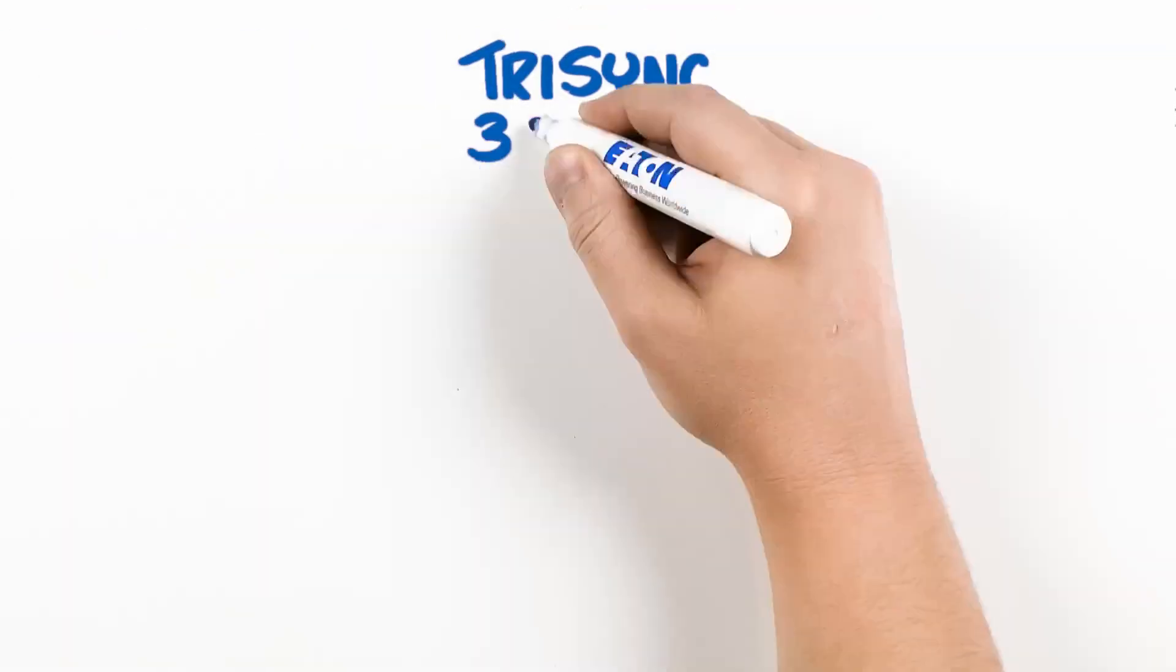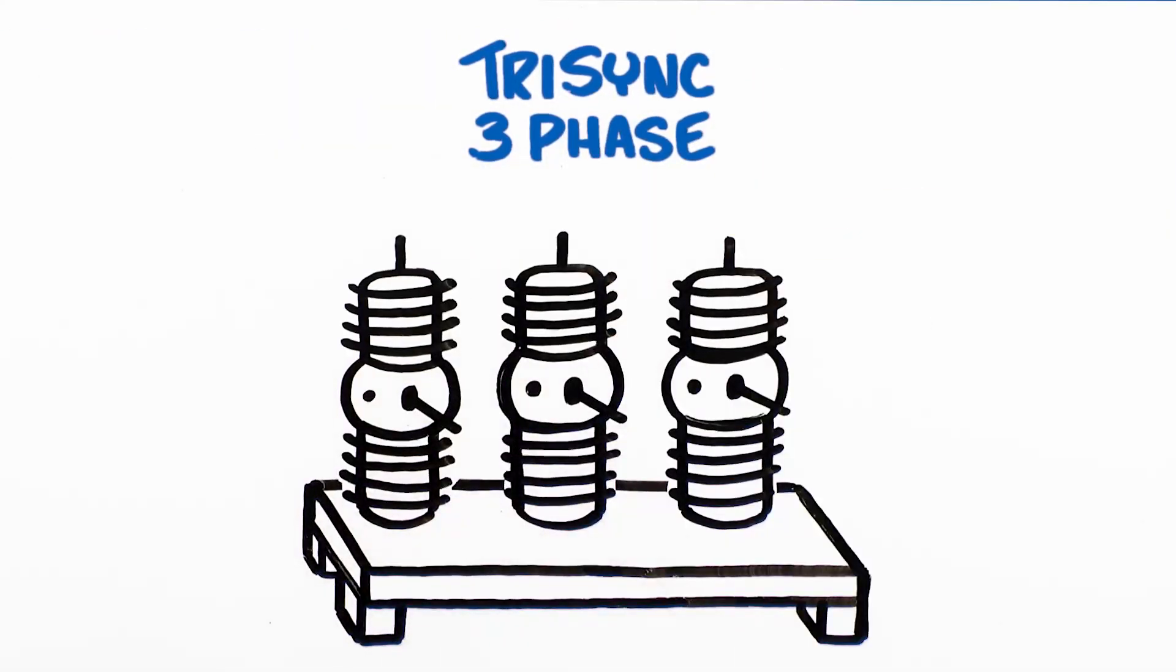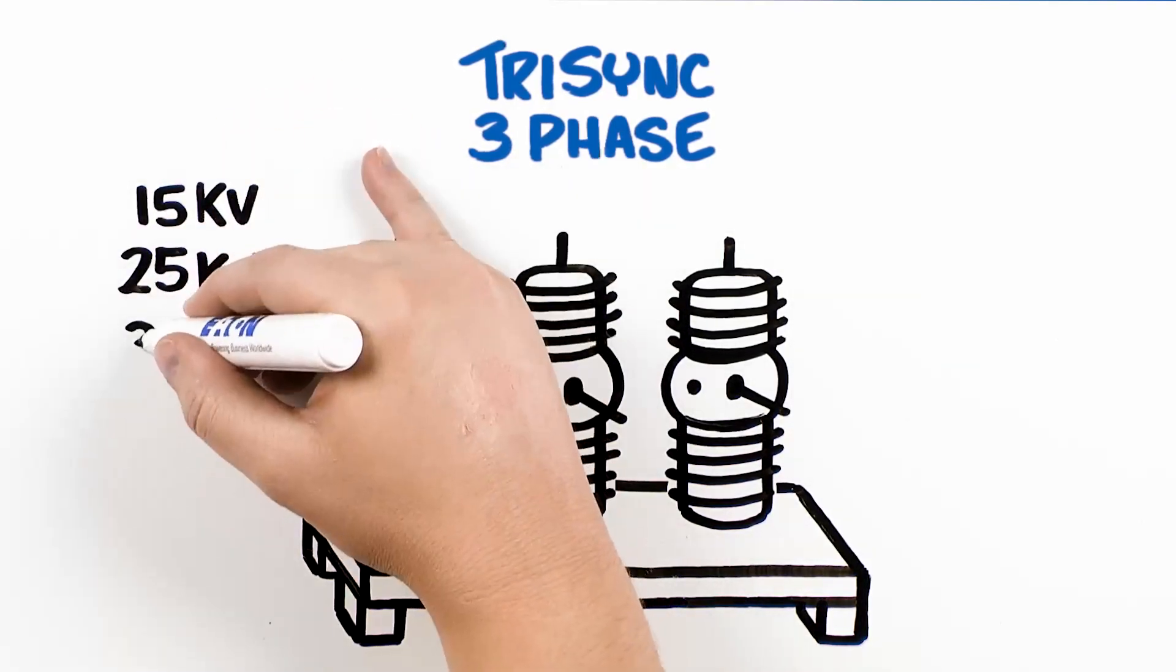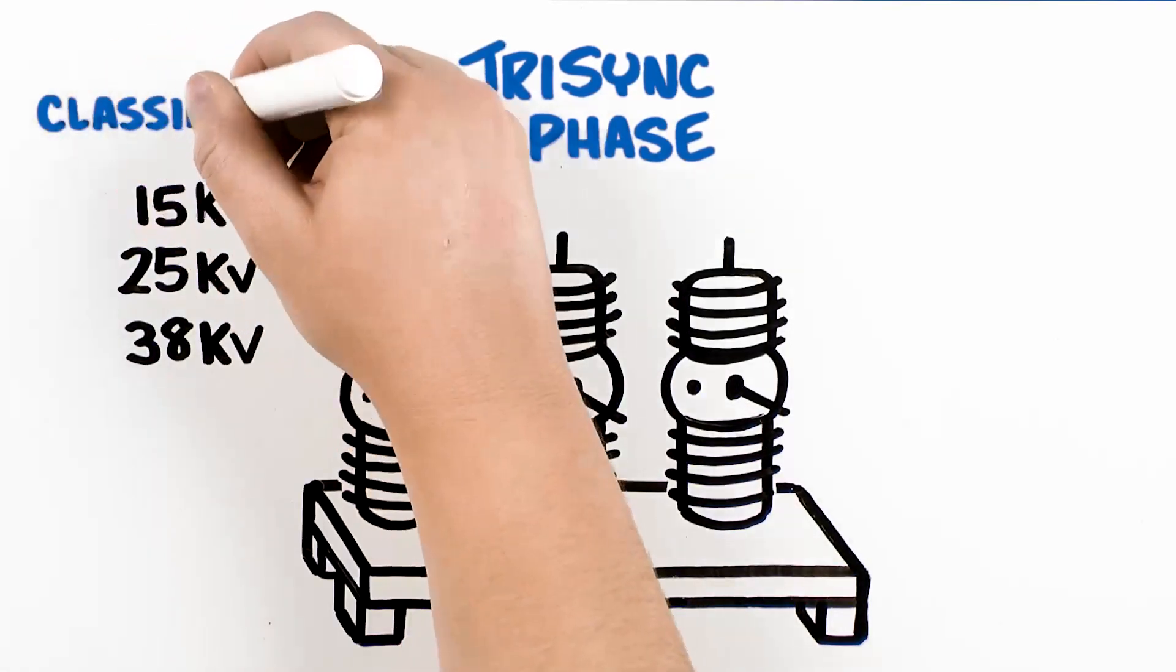Eaton's Tri-Sync 3-Phase Capacitor Switch is offered in 15 KV, 25 KV, and 38 KV voltage classifications.